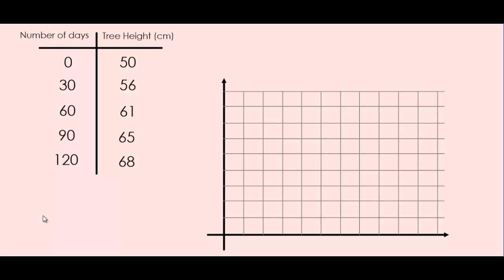Here are the things you need to know when you want to graph a table of values. First, we need to decide which of the variables is the independent variable and which is the dependent variable. It's easy to answer this by asking yourself: which variable depends on the other variable?